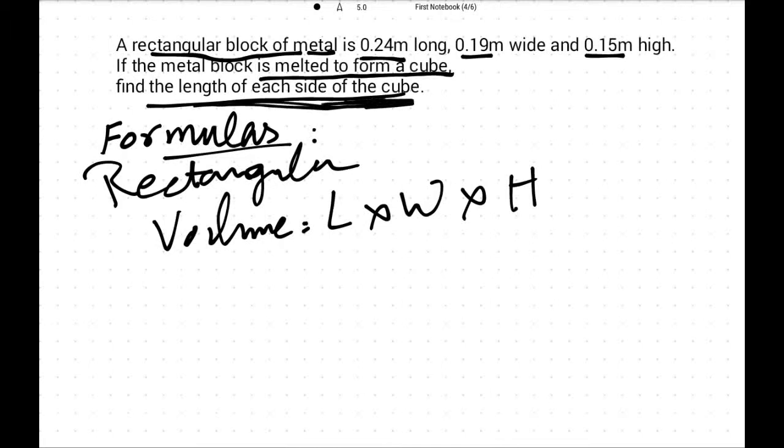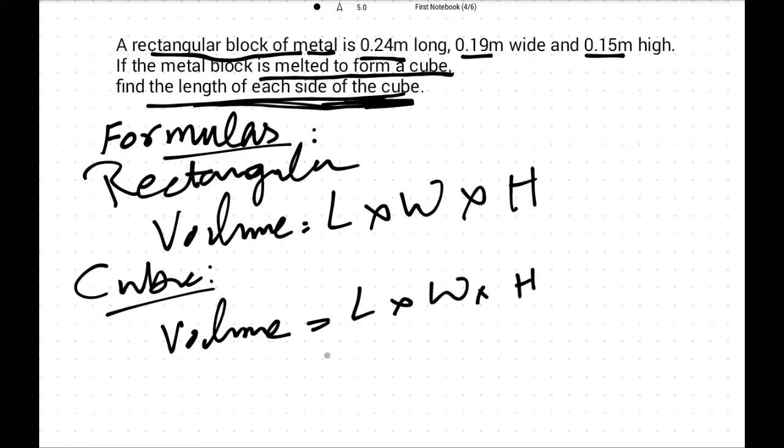Length of the cube means cube has all the values, all the lengths are same. So cube volume is equal to length times width times height. Cube has all same length so we consider X, X and X.